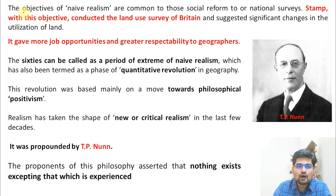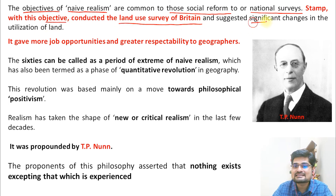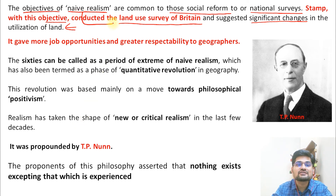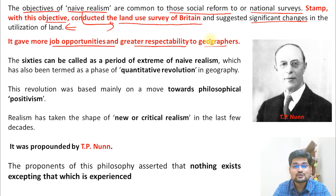The objectives of naive realism are common to social reform and national surveys. Dudley Stamp, with his objective of conducting a land use survey of Britain and suggesting significant changes in land utilization, was coming from this idea that it could be mapped in an absolute way. The land use survey was based on this kind of realism as seen in the works of Dudley Stamp. It gave more job opportunities and created greater respectability for geographers, and was widely accepted in the 19th and 20th centuries.